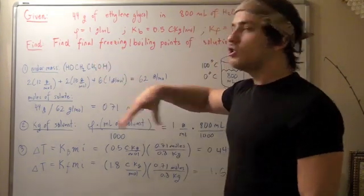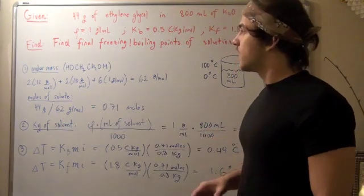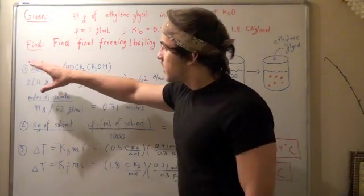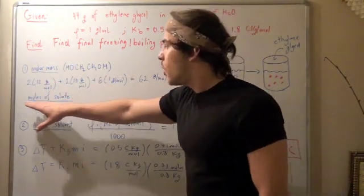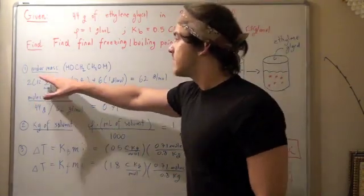In step one, we find the numerator of our molality, and in step two, we find the denominator of our molality. So that means first we have to find the moles of our solute, but before we get to the moles of solute, we have to find the molar mass.